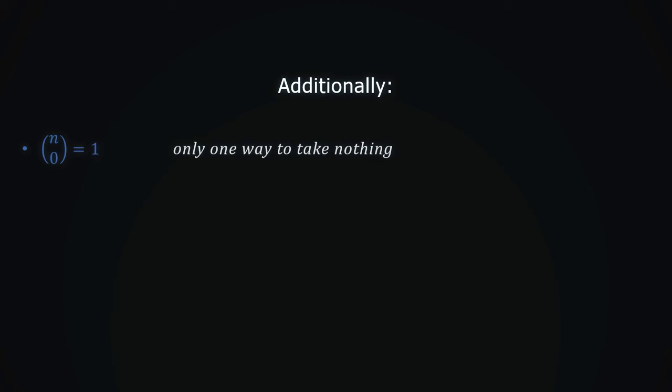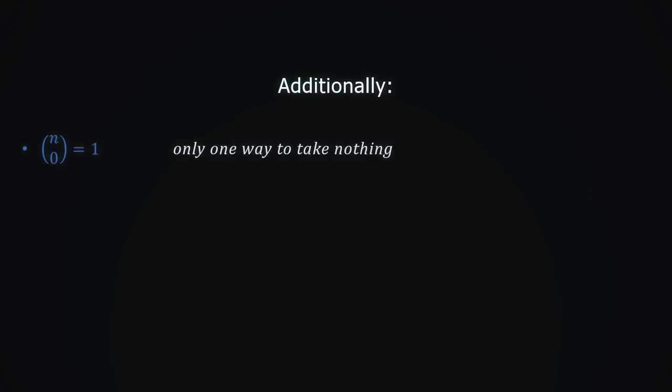Additionally, if k equals 0, then n choose 0 is always 1. This is because we can only take nothing in one way, and that is not to take anything. Also, n choose n is always 1, because it corresponds to taking the whole set.